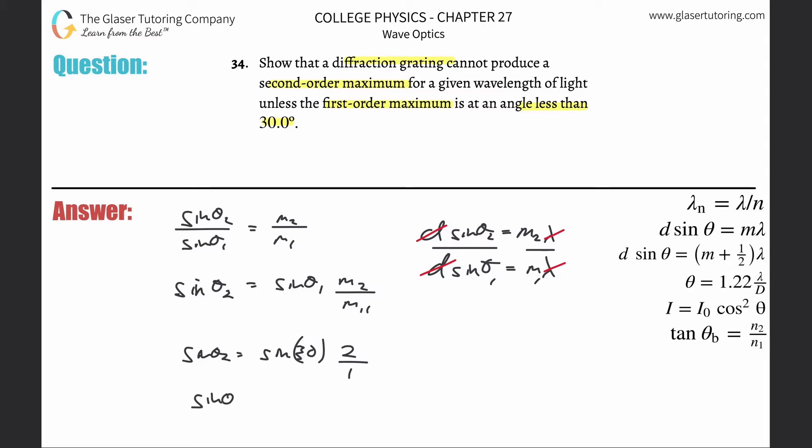Sine of theta 2. Sine of 30 is going to be a half. You can plug this all into your calculator, by the way. A half multiplied by 2 is going to be 1. Now here's the thing: 1 is the maximum value the sine of an angle is allowed to have. It's the maximum value.